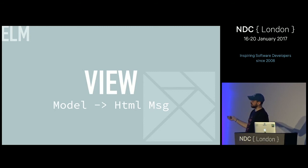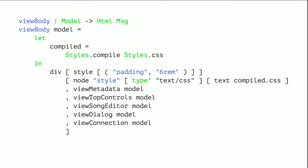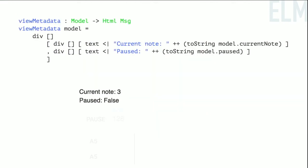That's all the update stuff. We covered using an external UI library with internal state, the Phoenix socket component, our own app logic, and music setup — all in about five pages of code with two or three lines each. Let's look at the view. All the view does is take your model and produce HTML that can produce messages. View body is the core. I'm using Elm CSS to produce some styles. There are five pieces broken off into functions: view metadata, view top controls, view song editor, view dialogue, and view connection.